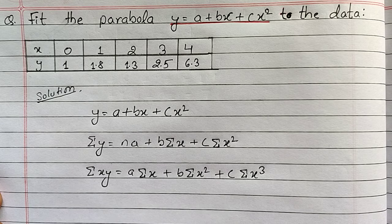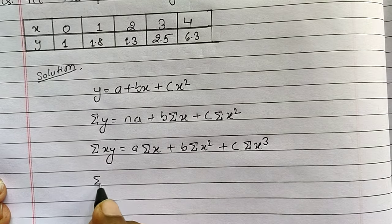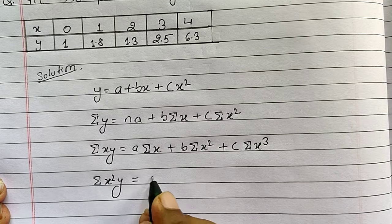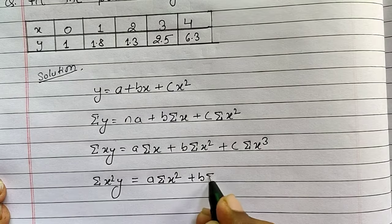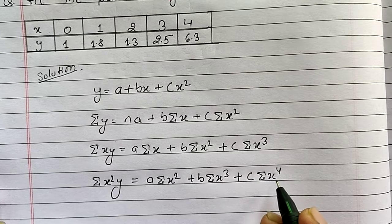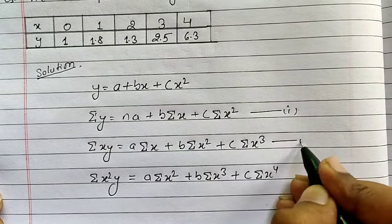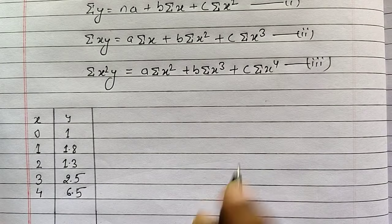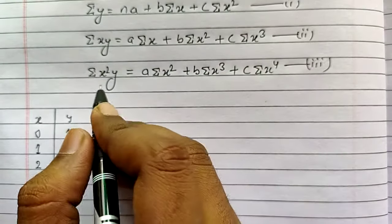We need to derive a third equation because we have three constants. So our third equation will be: summation x squared y equals to a summation x squared plus b summation x cubed plus c summation x to the power 4. Now write down the numbering of the equations — first, second and third.